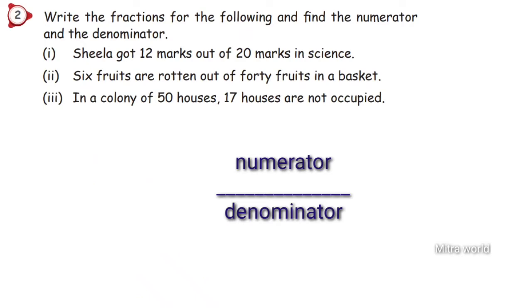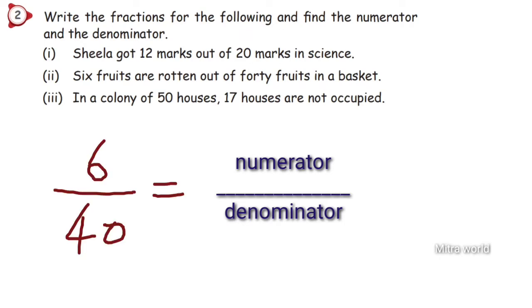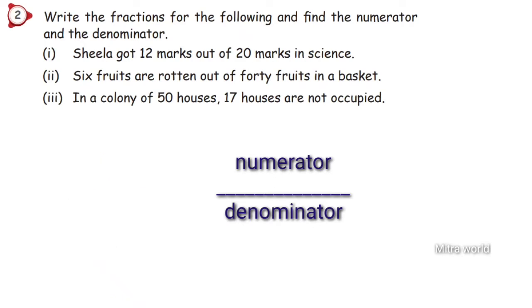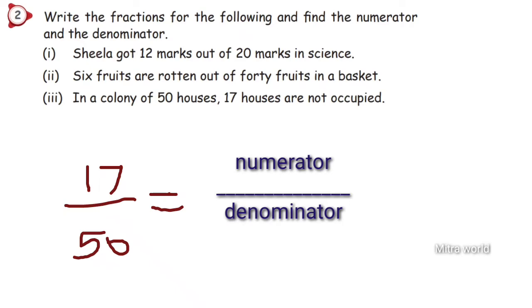Second: 6 fruits are written out of 40 fruits in a basket. The fraction is 6 by 40. Numerator is 6, denominator is 40. Third: in a colony of 50 houses, 17 houses are not occupied. The fraction is 17 by 50. Numerator is 17, denominator is 50.